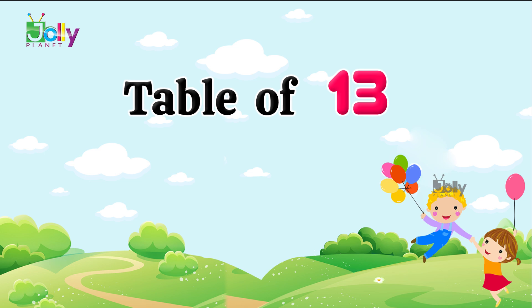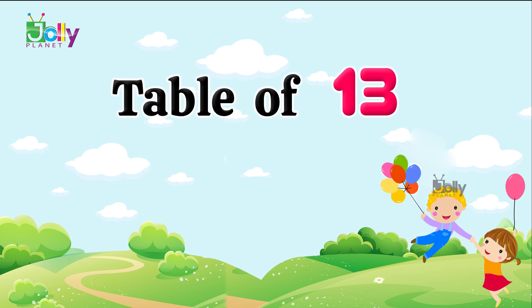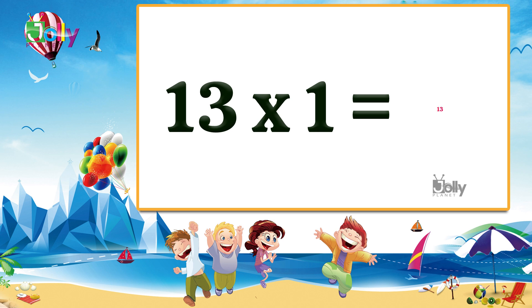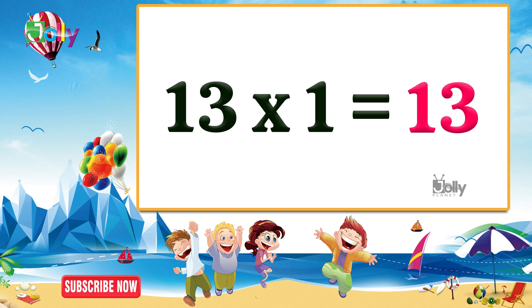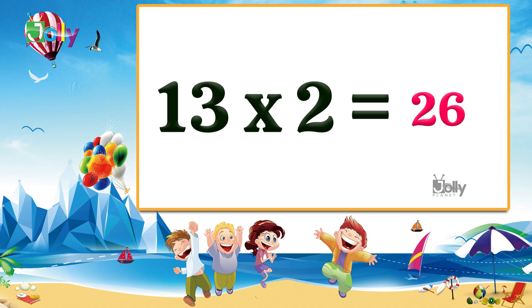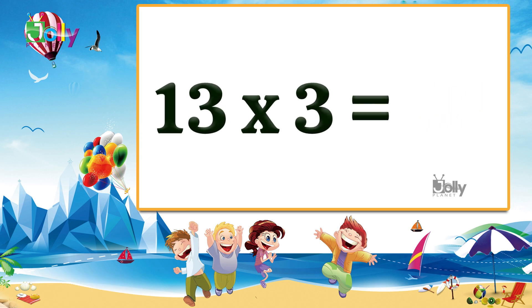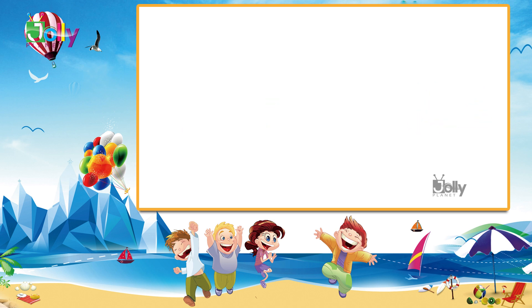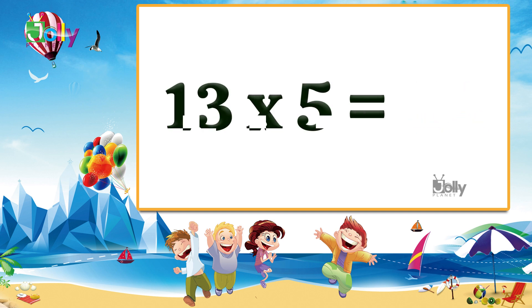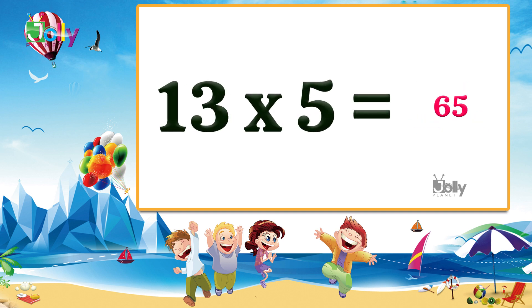Table of 13: 13 ones are 13, 13 twos are 26, 13 threes are 39, 13 fours are 52, 13 fives are 65.